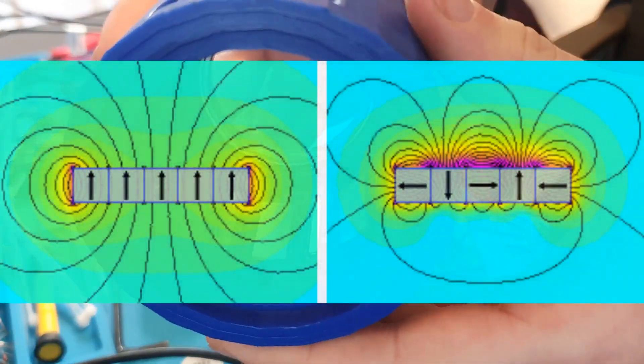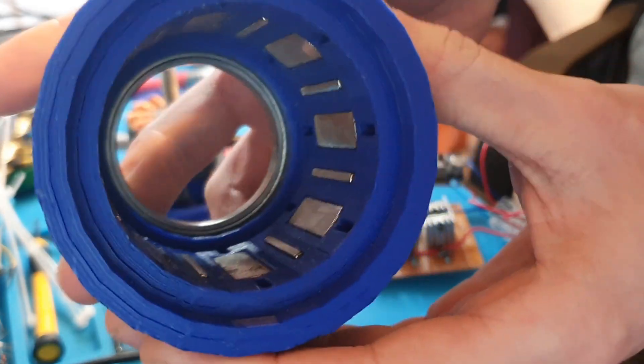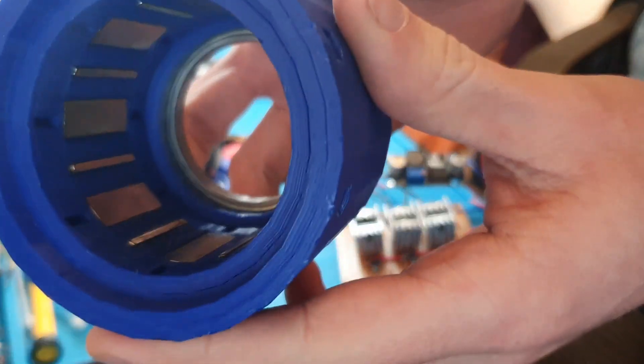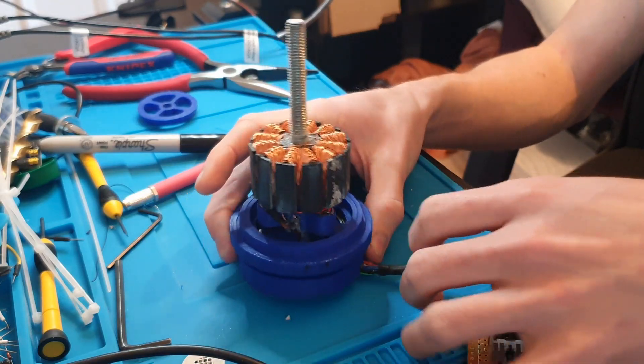I might make a video about that in the future, but that essentially just focuses the magnetic field inward so there's no wasted magnetic potential escaping the rotor, going outside the motor itself. This is actually about as torn down as it can get.